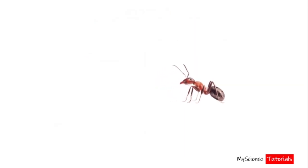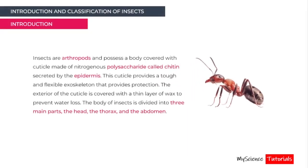Insects are arthropods and possess a body covered with a cuticle made of a nitrogenous polysaccharide called chitin, secreted by the epidermis. This cuticle provides a tough and flexible exoskeleton that protects the insect. The exterior of the cuticle is covered with a thin layer of wax that prevents water loss. The body of insects is divided into three main parts: the head, the thorax, and the abdomen.